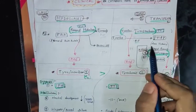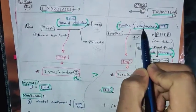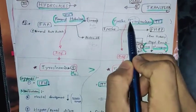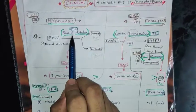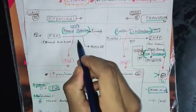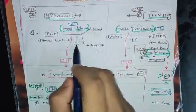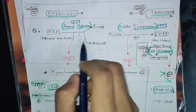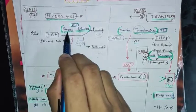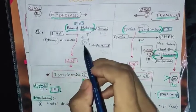The first reaction in tyrosine degradation is tyrosine converting into para-hydroxyphenylpyruvate (PHPP) — this is a transferase reaction, Class 2, because the enzyme name starts with 'trans' (aminotransferase). For the hydrolase example — highlighted in green — adding water is involved. You can see in textbooks that water is present in that reaction. Because it involves fumarylacetoacetate, the enzyme is fumarylacetoacetate hydrolase. The plus sign indicates addition of water.